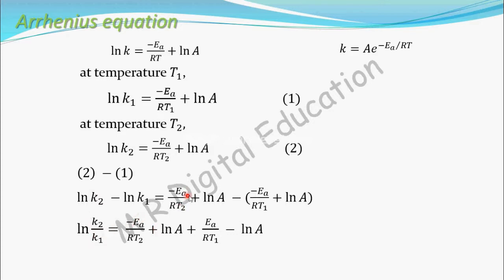This is equal to, keep this as it is minus Ea by RT2 plus ln A. And this minus and this minus will become plus. So, Ea by RT1 minus and plus minus and ln A. Now, this plus ln A and minus ln A will get canceled, cancel these two.